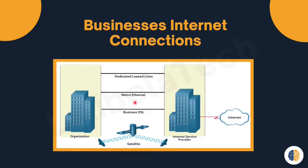A few examples: first, dedicated leased lines. Leased lines are reserved circuits within the service provider's network that connect geographically separated offices for private voice or data networks. The circuits are rented at a monthly or yearly rate. The next one is metro ethernet, sometimes known as ethernet wide area network. It extends LAN access technology into a wide area network access technology.